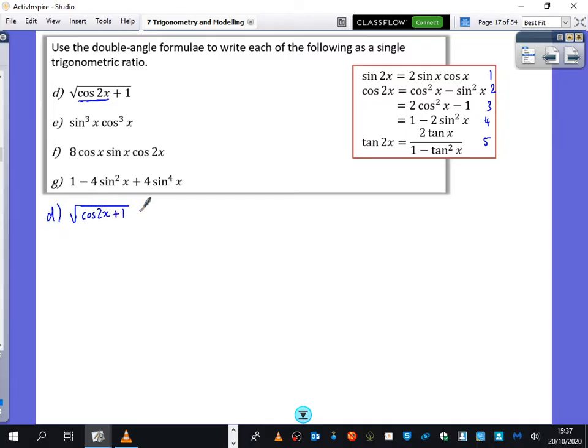So cos 2x plus 1. Well, I think if I use number 3, the plus 1 and the minus 1 are going to cancel out nicely. So I'm going to replace the cos 2x with rule number 3, which replaces it with 2 cos squared x minus 1. And don't forget, I've got this extra plus 1 at the end, which are going to cancel. So that gives me 2 root 2 cos squared x, which is root 2 multiplied by root of cos squared x, which is just root 2 cos x. The square root of the cos squared x is just root 2 cos x here. So it's a bit weird, that one. It's a little bit different.